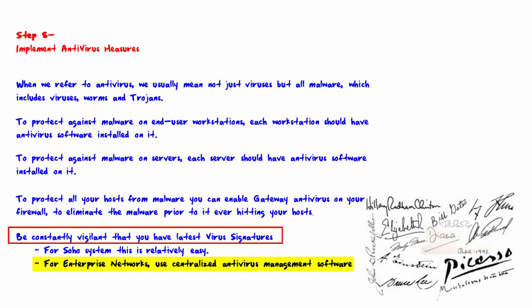For enterprise networks, use centralized antivirus management software. If it is your job to protect a large corporation with a couple thousand workstations, how can you make sure all workstations have antivirus installed and have the latest signatures? You need to use centralized antivirus management software, such as McAfee ePolicy Orchestrator. Using this type of software, you can see every workstation on your network, whether each workstation has antivirus installed, and whether each workstation has the latest signatures — and if not, how old they are.